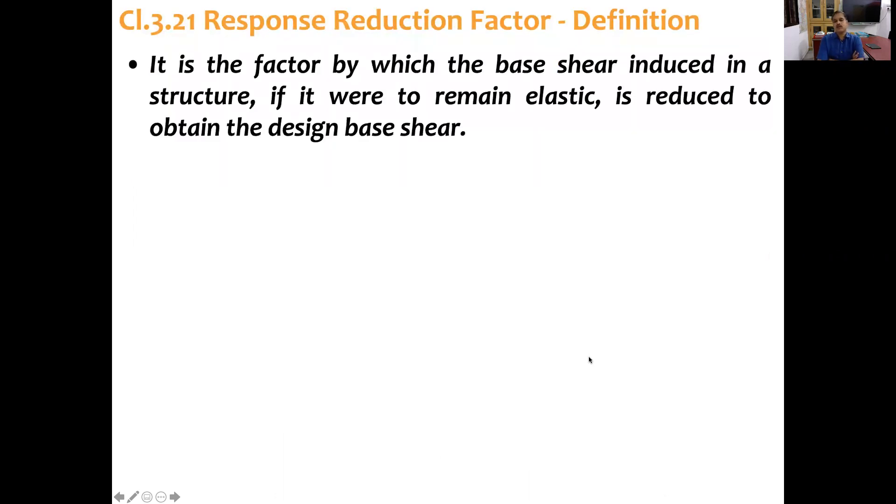The definition: the code says it is a factor by which the base shear induced in a structure, if it were to remain elastic, is reduced to obtain design base shear. Base shear is calculated using this formula: VB equals AH multiplied by W.